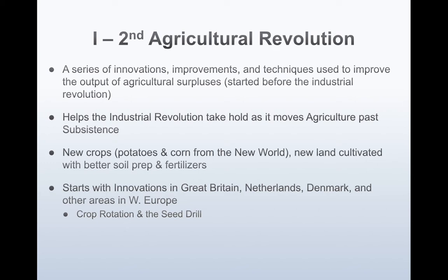It starts with innovations in Great Britain, Netherlands, Denmark, and other areas of Western Europe. We see new inventions like the seed drill, which increased efficiency — farmers were able to plant their seeds with less waste because the seed drill implanted them straight into the ground and in a straight row. So it was easier for farmers to distinguish the weeds from the actual plants being grown, because anything not in the line was clearly a weed.